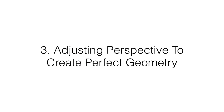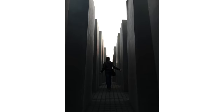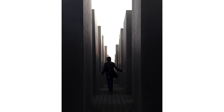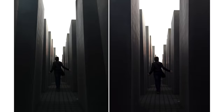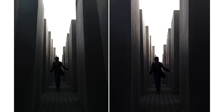The third technique is adjusting perspective to create perfect geometry in your photos. This is very important for architecture photos, especially when photographing subjects significantly taller than you. For example, this photo from the Holocaust Memorial in Berlin is beautiful, but the lines are converging towards the top — none of the vertical lines are actually vertical in the frame. With perspective correction, all the vertical lines become perfectly vertical, creating a really beautiful geometry. Looking at the two side by side, you can see the slanted converging lines on the left versus the perfectly vertical lines on the right.